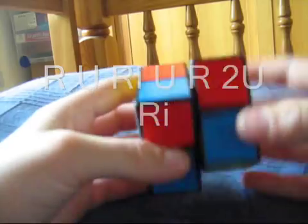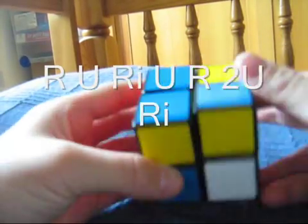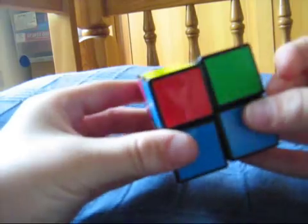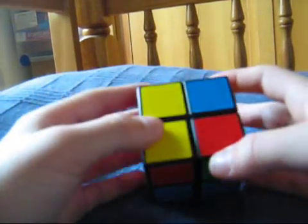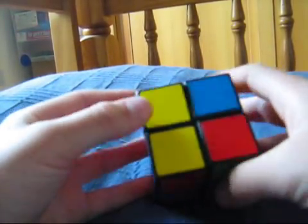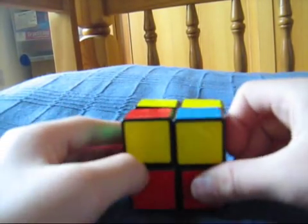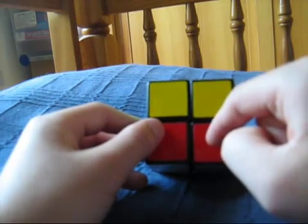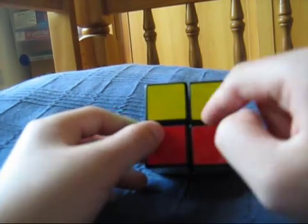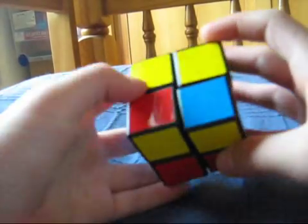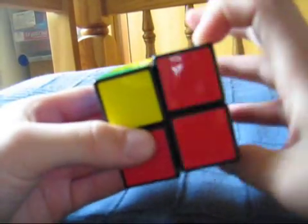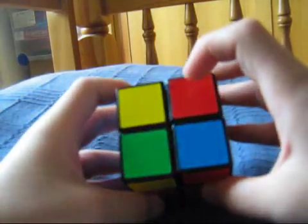R-U-R-I-U-R-2U-2R-I-U. And now we've got two yellow pieces. Now if you've got two yellow pieces, put the cube in position so that there is a yellow piece on the upper left of the front side. And then just do that algorithm again. R-U-R-I-U-R-2U-2R-I.